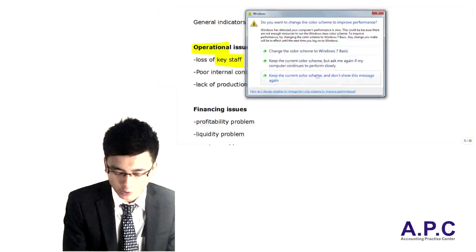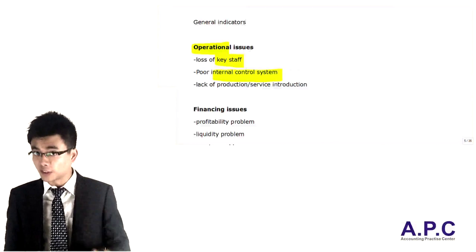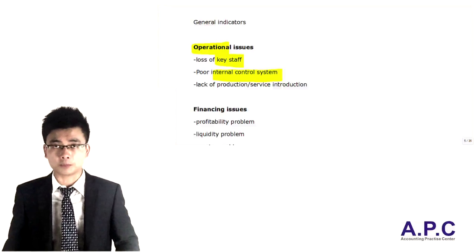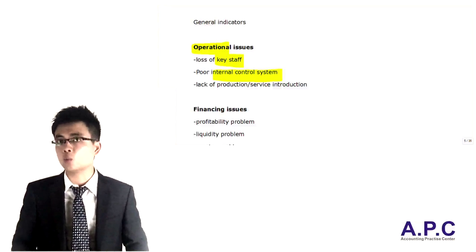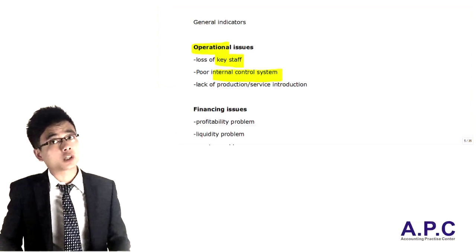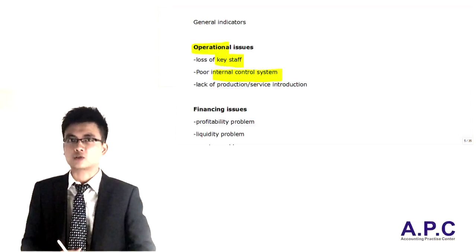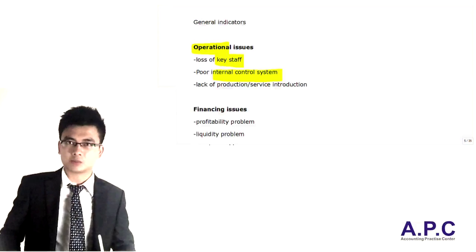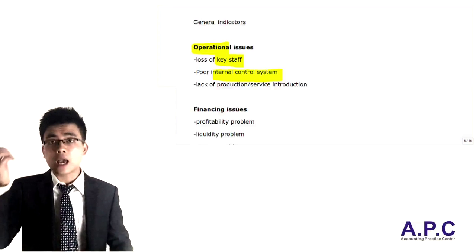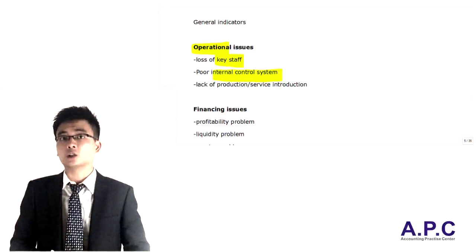Also, if you've got a poor internal control system — for example, the management within the company has breached the internal control systems very easily. If the company has one million dollars of cash and the CEO takes the cash from the company into his own pocket, by doing this kind of related party transaction he can simply take the money without any disclosure because of a poor internal system. As a result, the company lacks cash to do further work.